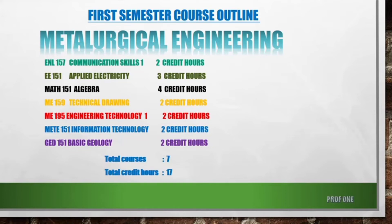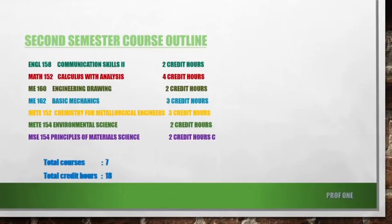For the second semester course outline, we have: Communication Skills (2 credit hours), Calculus with Analysis — highlighted in red because it's very demanding — (4 credit hours), Engineering Drawing (2 credit hours), Basic Mechanics (3 credit hours), and Chemistry for Metallurgical Engineers (3 credit hours).